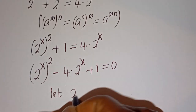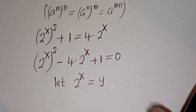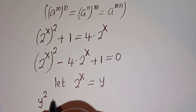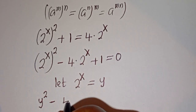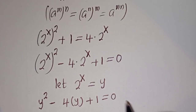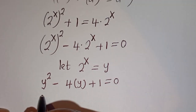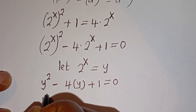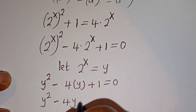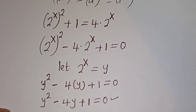Let 2 to the power of x be equal to y. And this can be written as y squared minus 4 multiplied by y plus 1 is equal to 0. Then we have y squared minus 4y plus 1 is equal to 0, which is a quadratic equation.